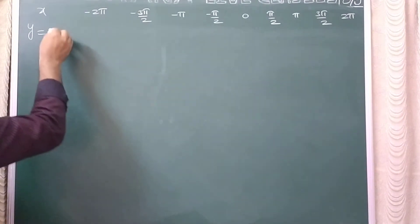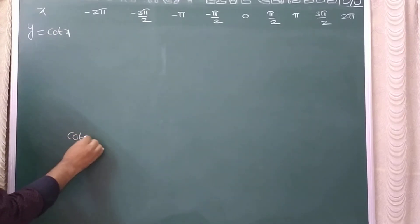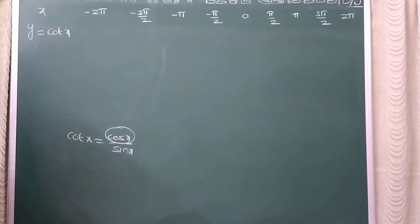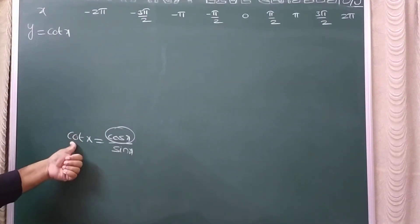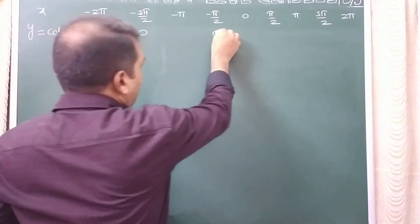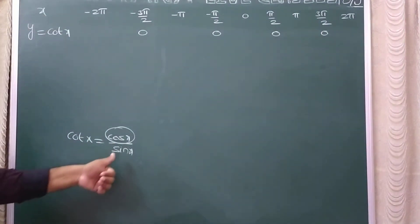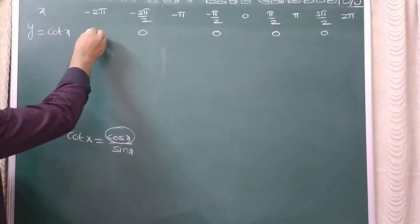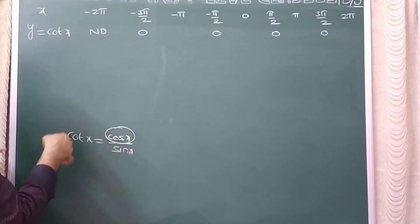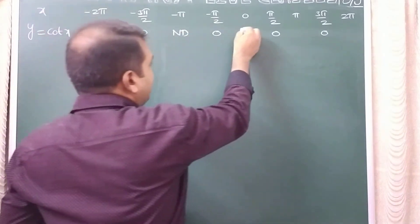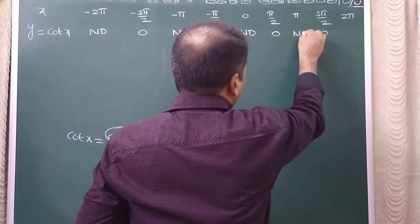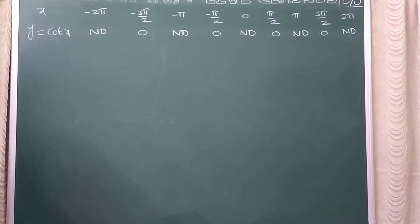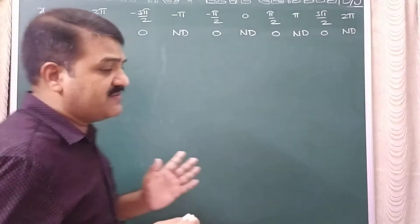So y = cot x, and we know cot x = cos x divided by sin x. That means whenever cos x is 0, cot x will be 0 - so for all odd multiples of pi by 2, cot x is 0. Whenever sin x is 0, cot x is not defined. Sin x is 0 for multiples of pi, so for all multiples of pi including 0, cot x is not defined.